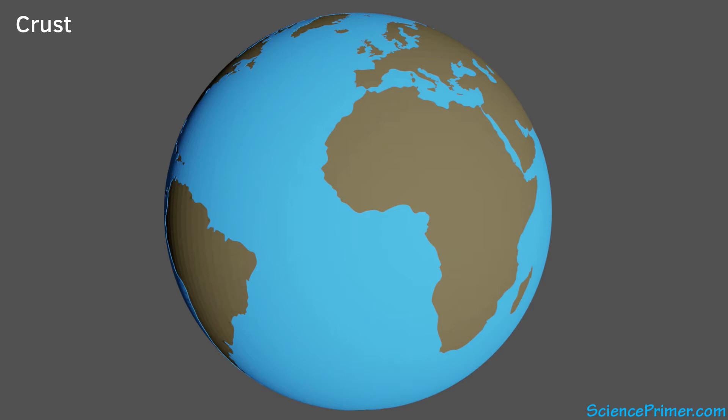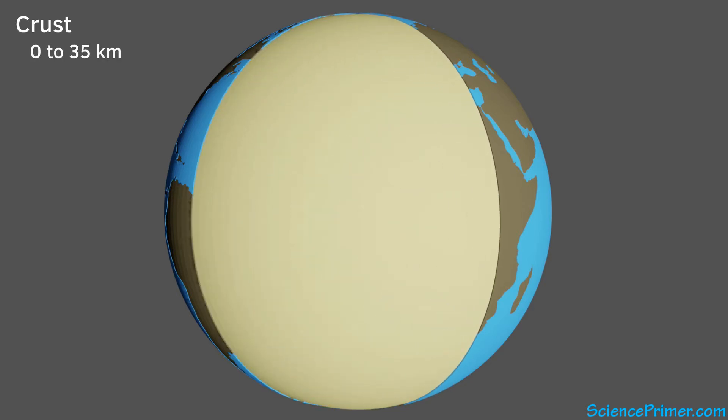Its thickness varies from a few kilometers under parts of the ocean to about 30 to 35 kilometers under the continents. It is made up mostly of oxides of aluminum and silicon.